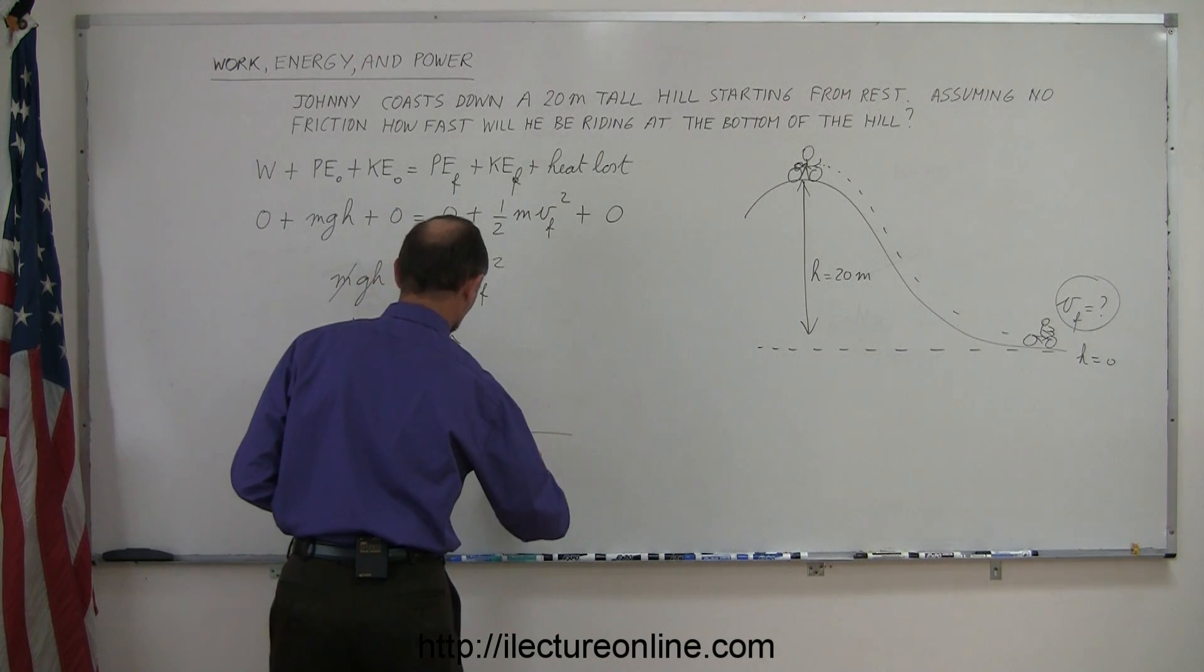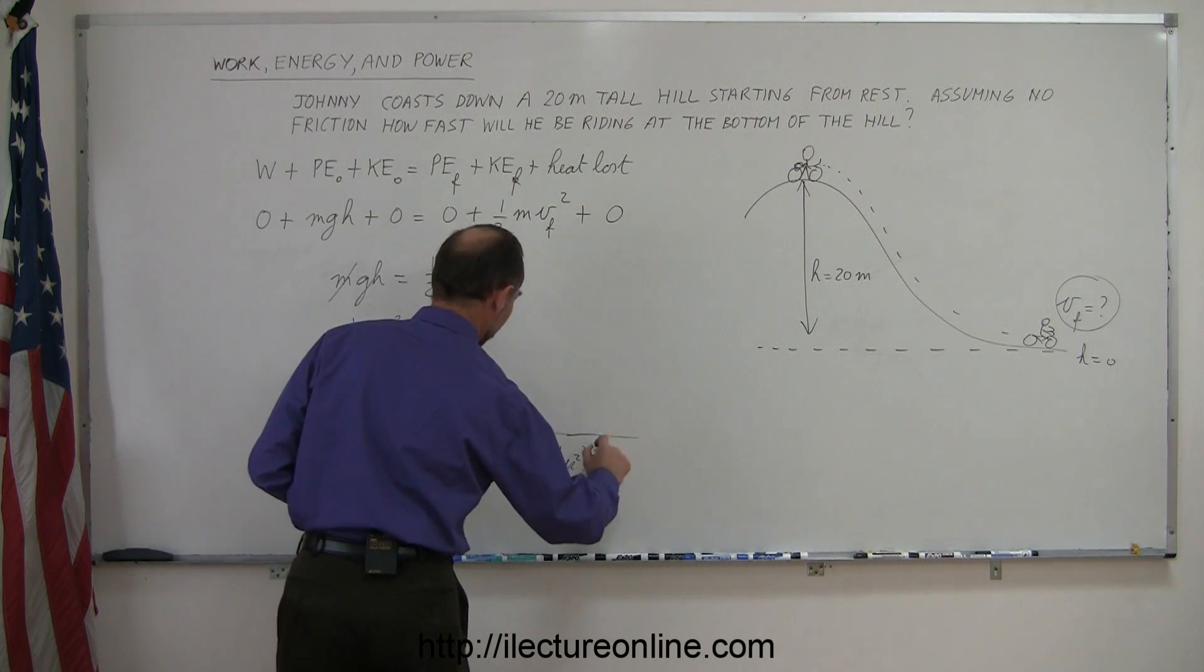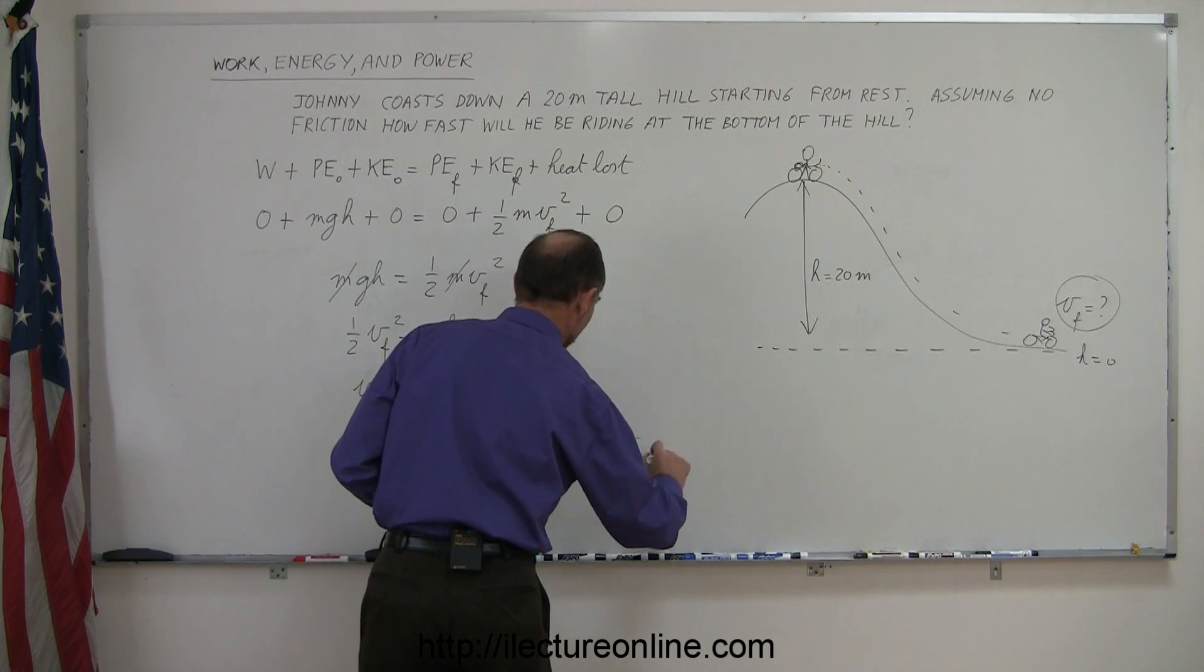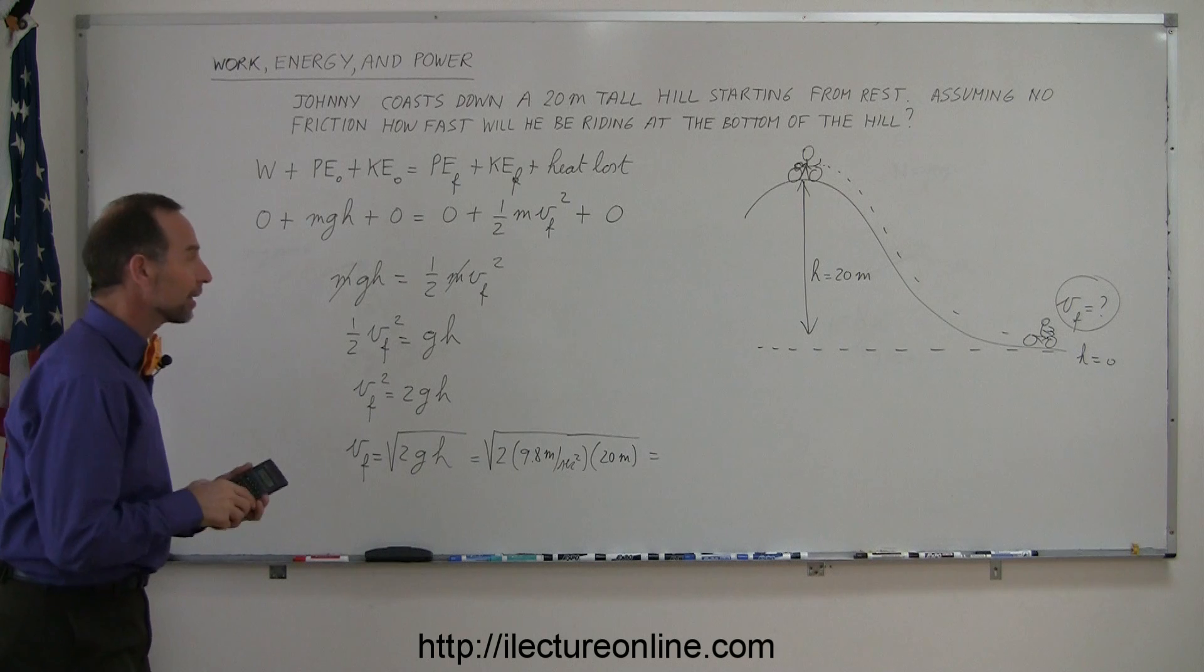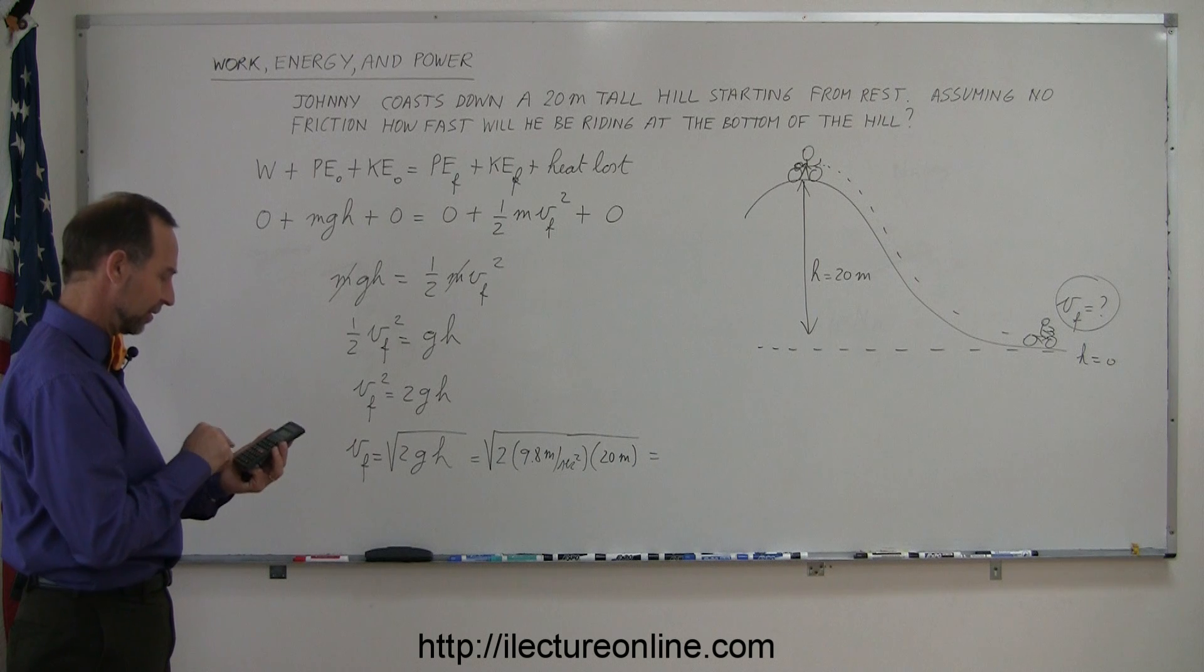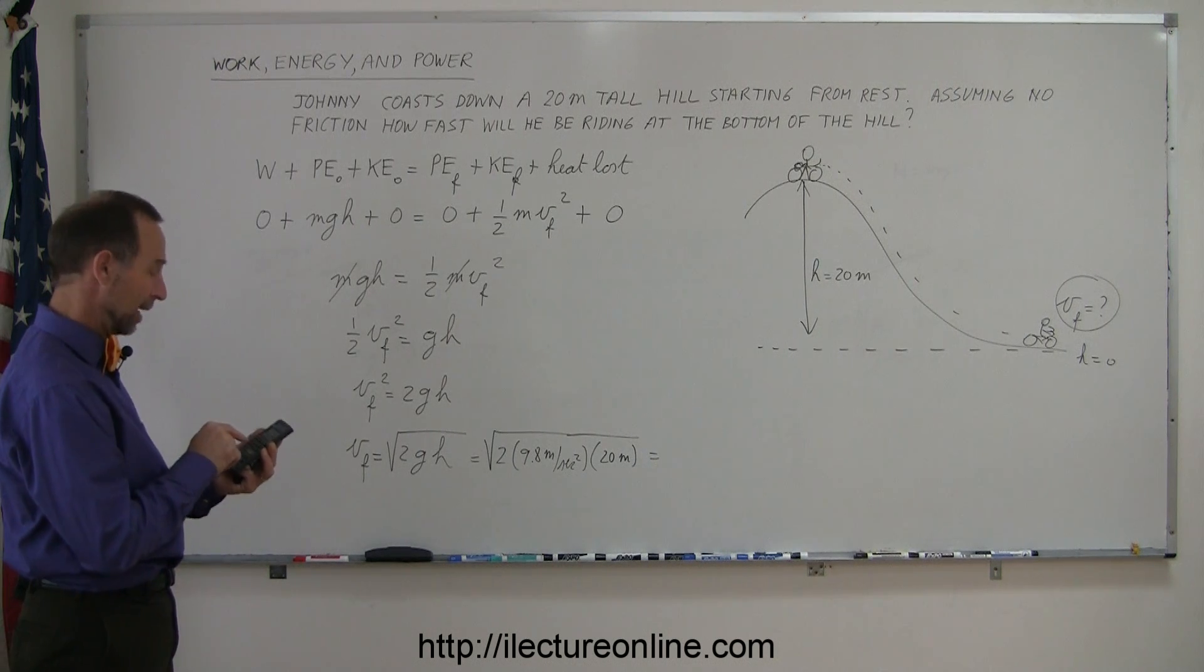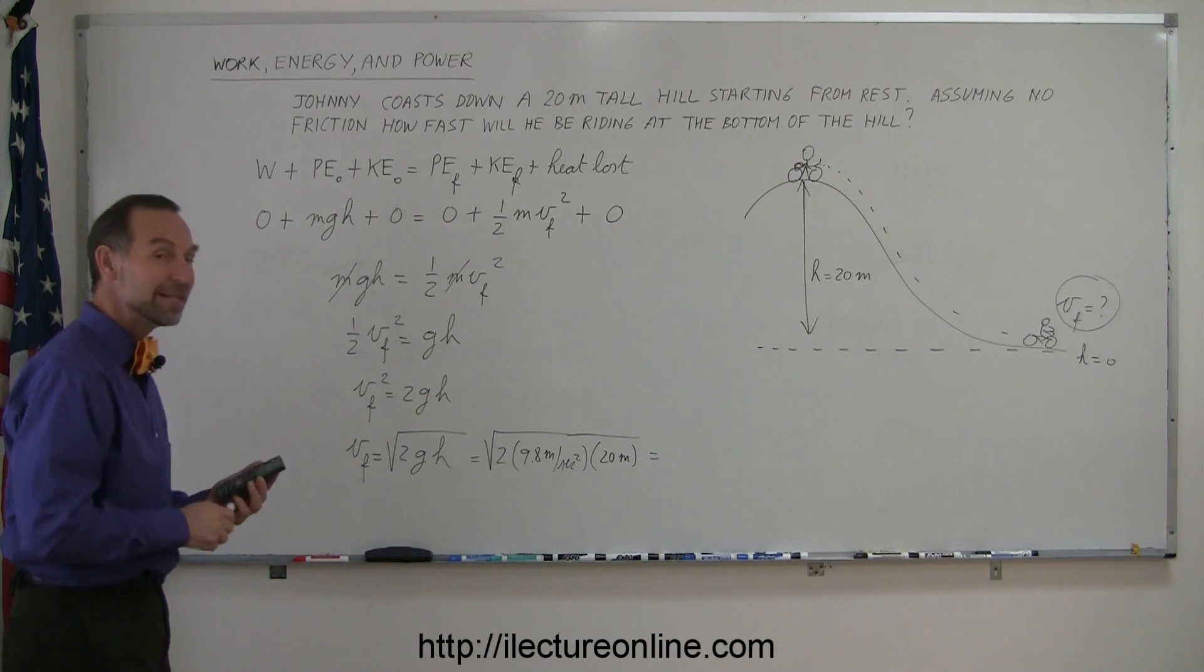So this is equal to the square root of 2 times 9.8 meters per second squared, times the height, the initial height of 20 meters. And that should tell us how fast Johnny will be riding at the bottom of the hill. All right, so we have 2 times 9.8 is 19.6, times 20, and then we take the square root, and we get 19.8 meters per second.